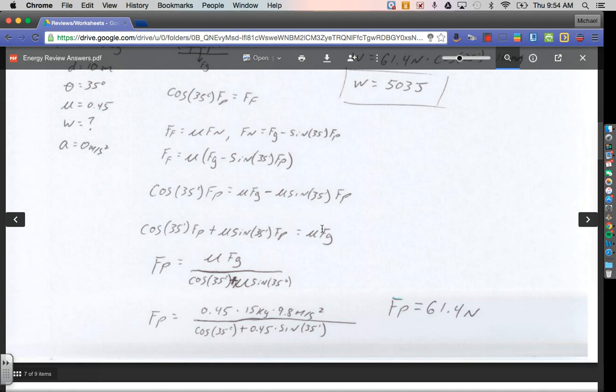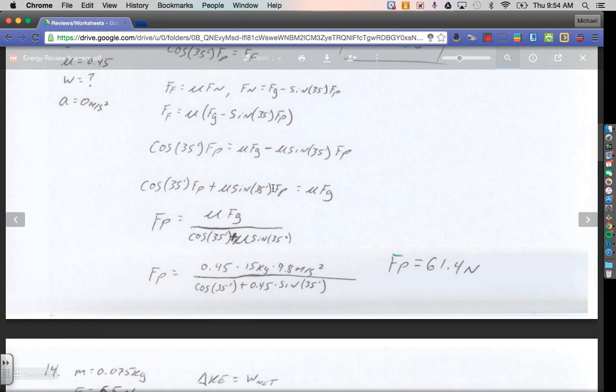Now I'm going to factor out my forces of pull, and what that leaves me is force of pull goes out, and cosine of 35 and mu sine 35 are hanging out in parentheses, and I'm going to divide those over to the bottom here. So my force of pull, when I factor it out and move the other stuff over, I get mu force of gravity in my numerator, divided by the cosine of 35 plus mu sine 35. I can plug in all my numbers.